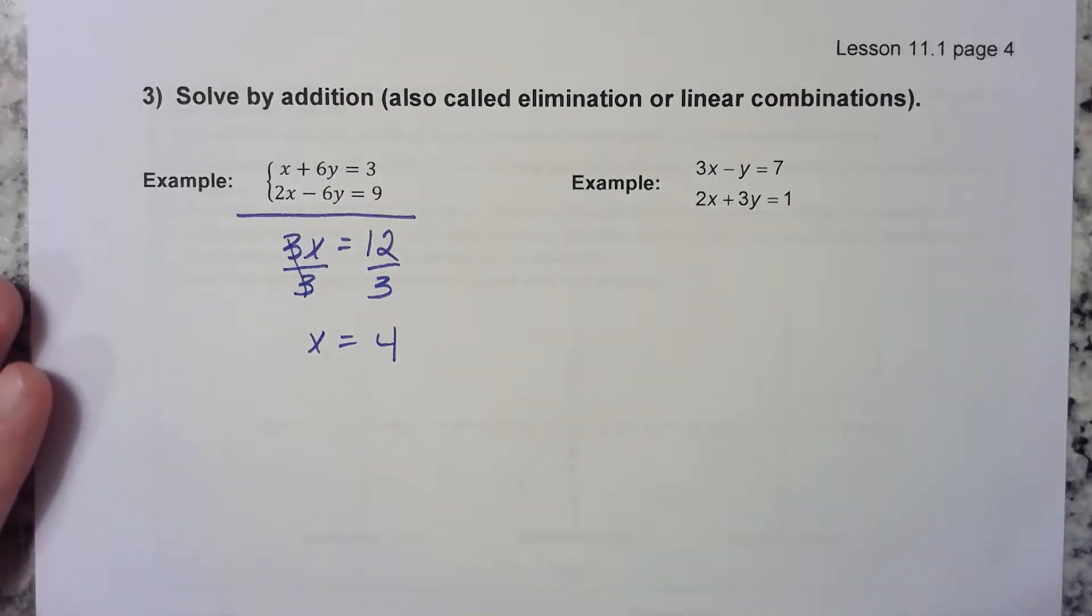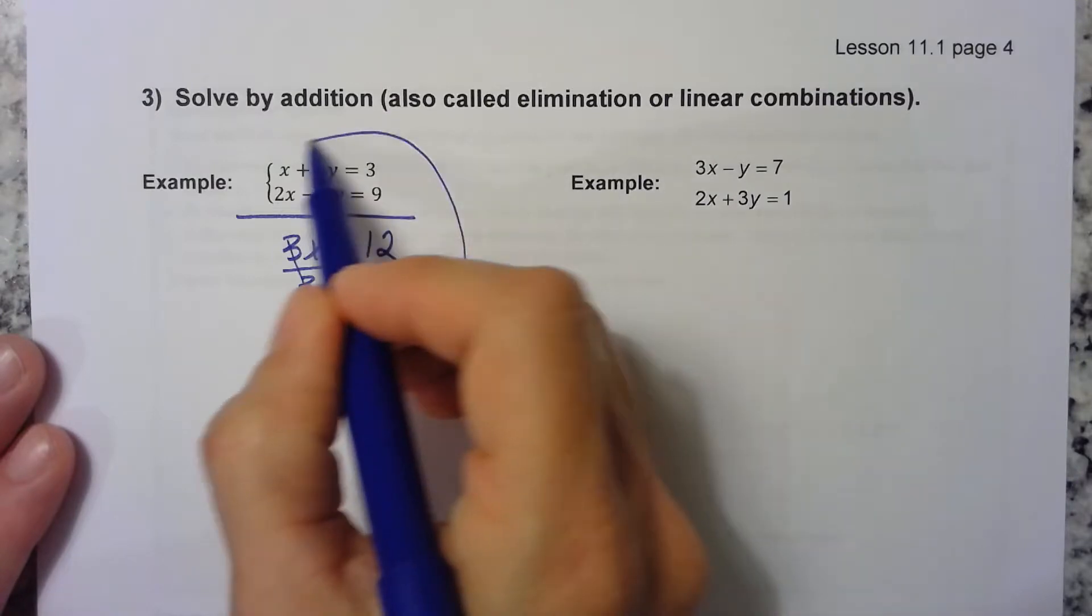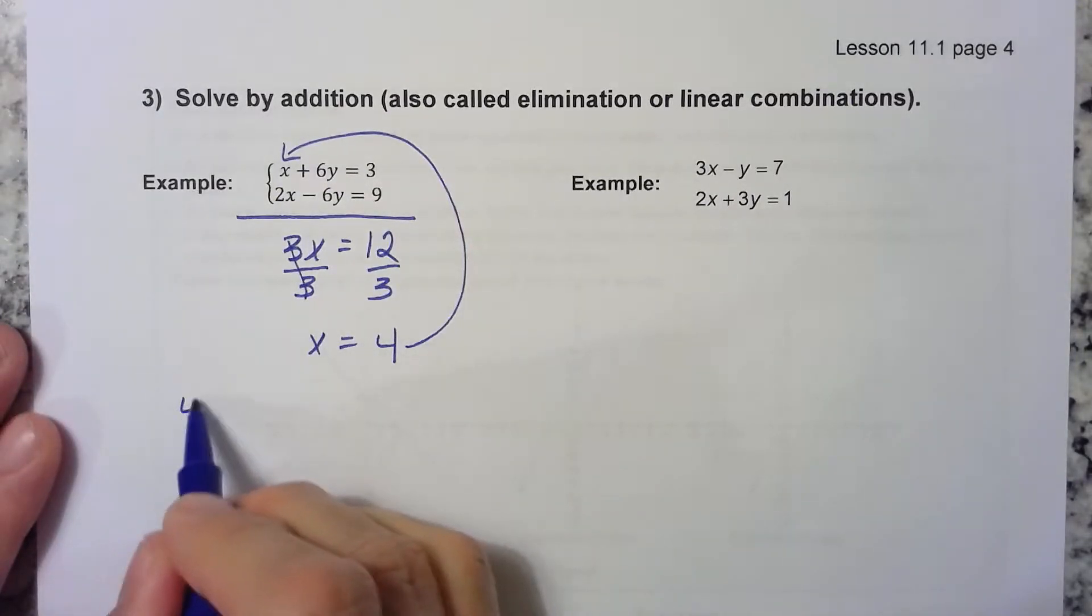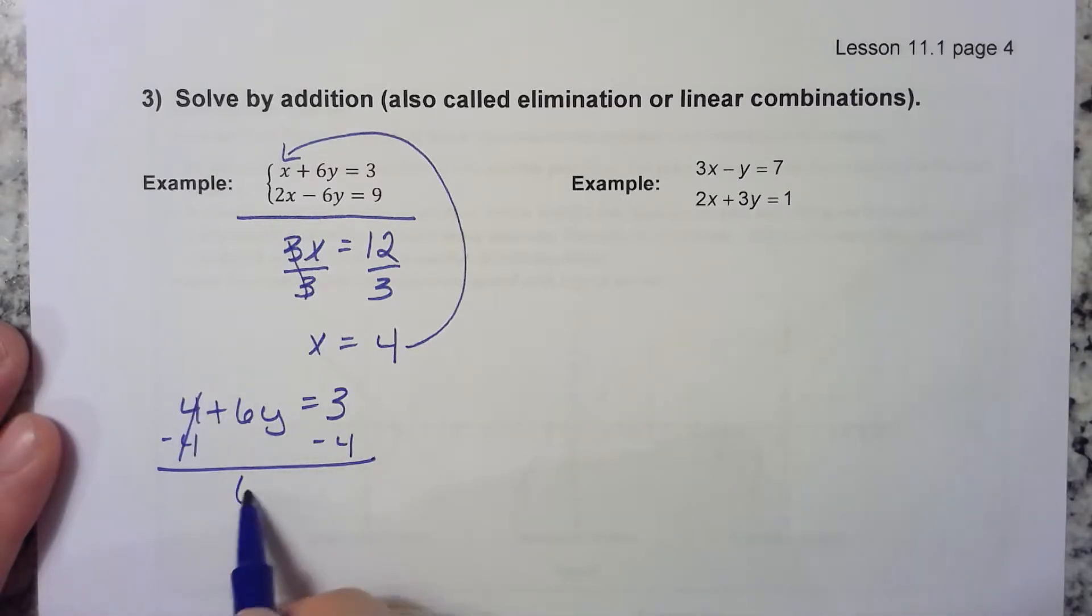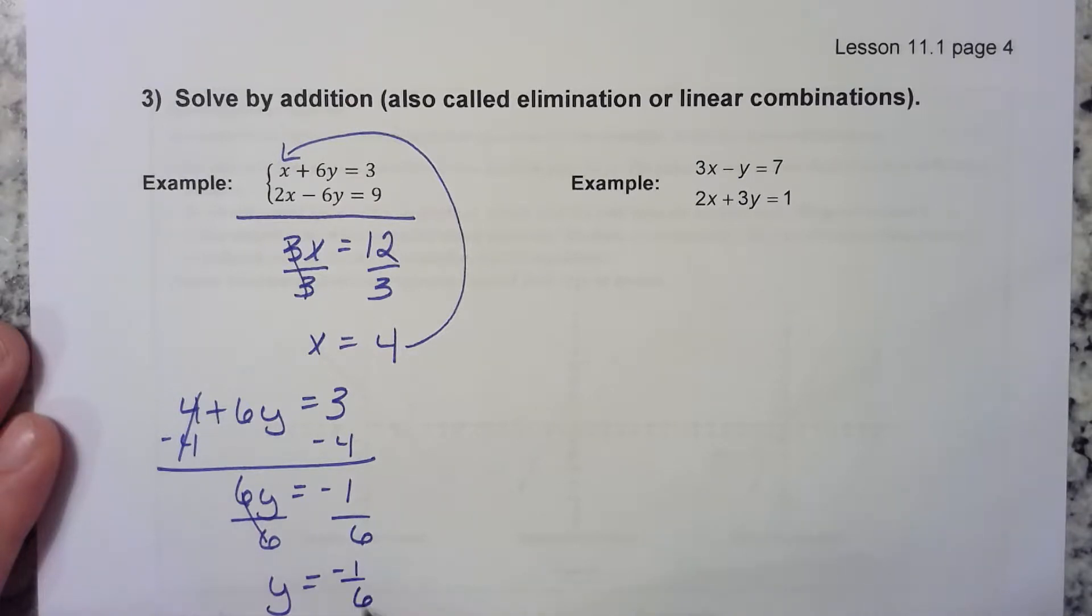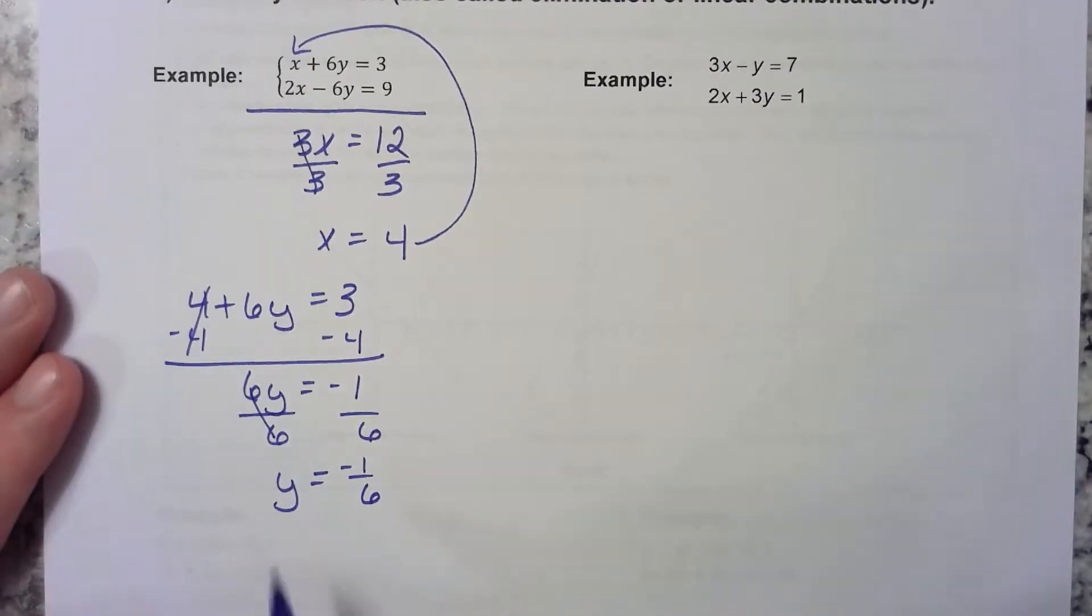I already know x. That's pretty cool. Now I can just substitute that back in and find y. I think the first equation might be the easiest. So let's take this 4 and put it right there for x. So we have 4 plus 6y equals 3. Subtract 4. 6y is equal to negative 1. Divide by 6. So y is equal to negative 1 sixth. The solution to this system is 4, negative 1 sixth.